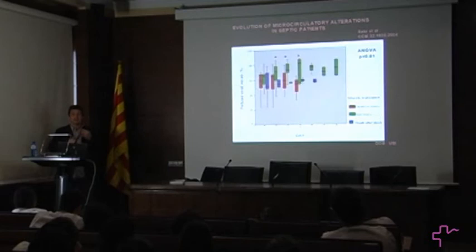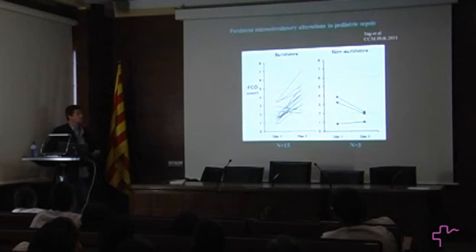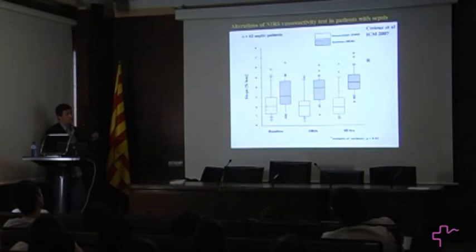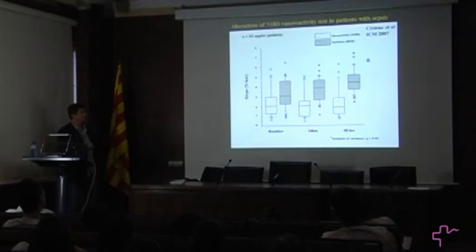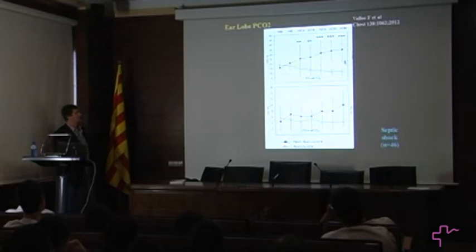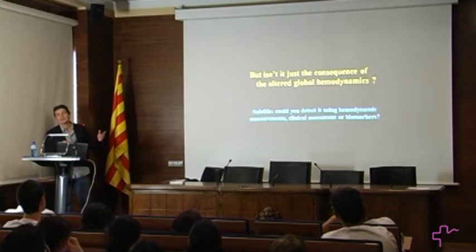This is also true in children: though very few children die of septic shock, when it occurs there is deterioration of the microcirculation from day one to day two, not observed in survivors. Microvascular reactivity is higher in survivors, improves in survivors, while remaining affected in non-survivors. Other estimations such as venous-to-arterial CO2 gap deteriorate in non-survivors while improving in survivors.